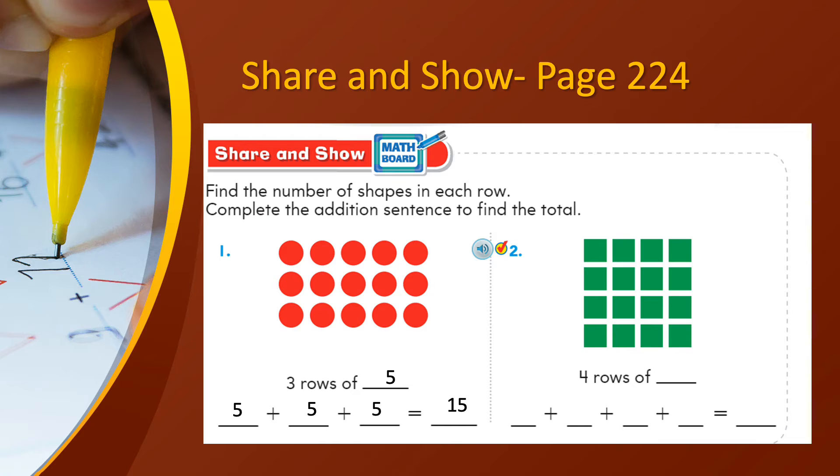Let's look at the second one. 4 rows of, how many green boxes do you see? 1, 2, 3, 4. So 4 rows of 4. Excellent. So 4 plus 4 plus another 4 and yet another 4. So how much will be 4 plus 4 plus 4 plus 4? It will be 16. Bravo. Very good.